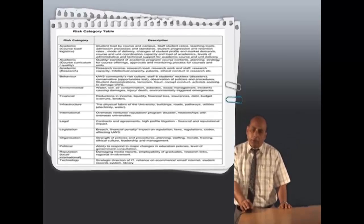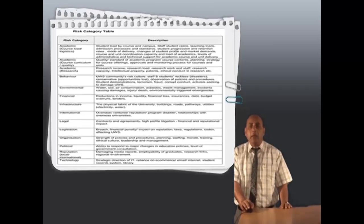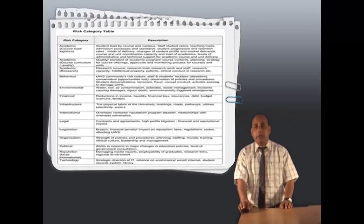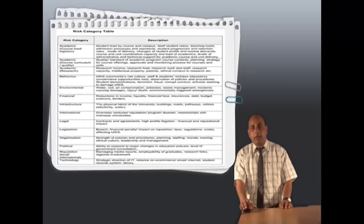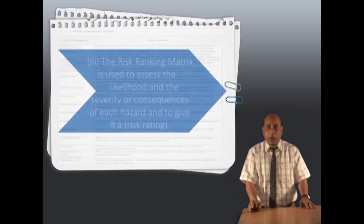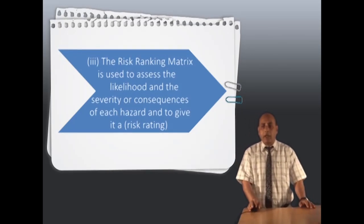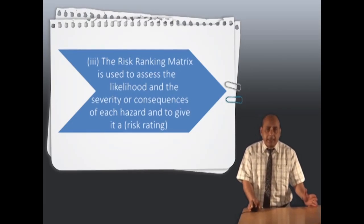Also technology: strategic direction for information technology, reliance on email, internet, student record systems, and library. After identifying and categorizing the risk, now we have to rank the risk.